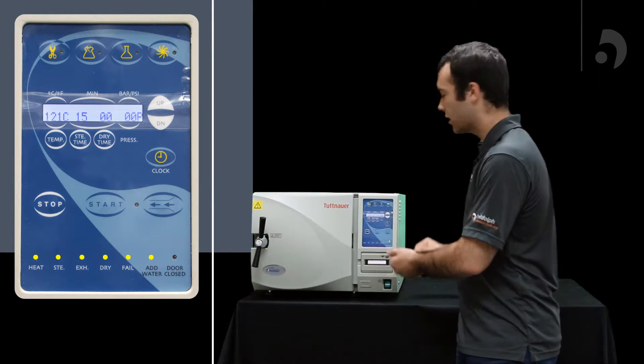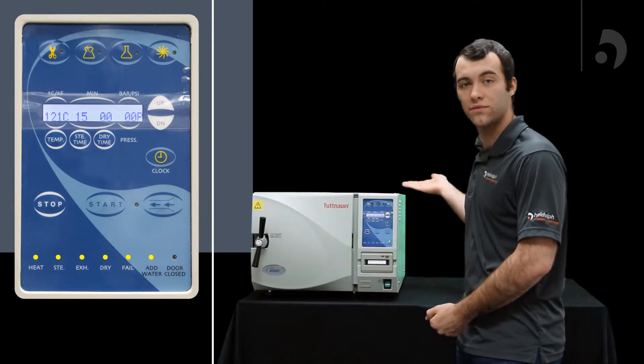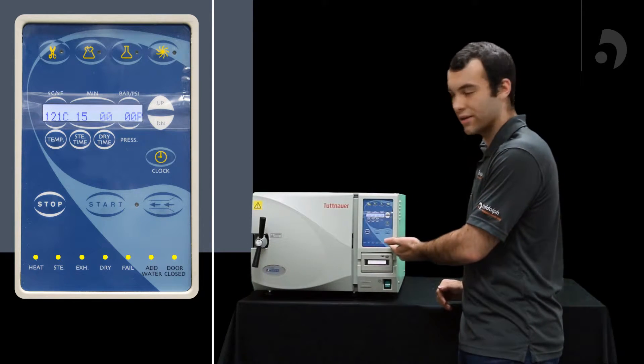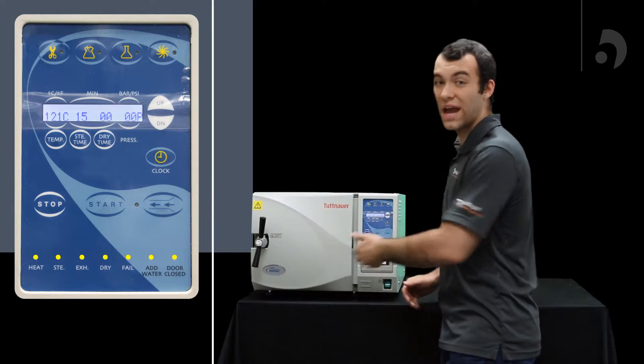We've got our add water light, which is in case you need to add more water to your reservoir. And we've got our door closed light, which will tell you that your door is closed and you're ready to start sterilizing. And now I'm going to show you how to use your dry cycle.